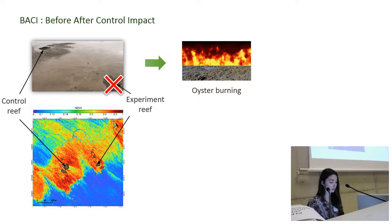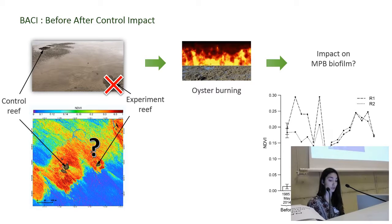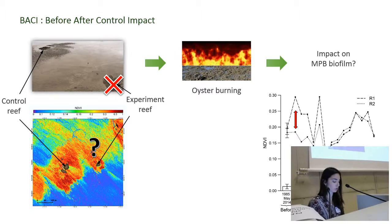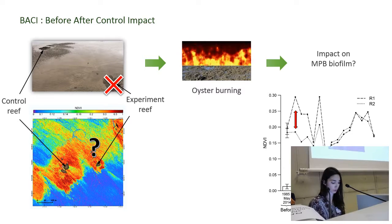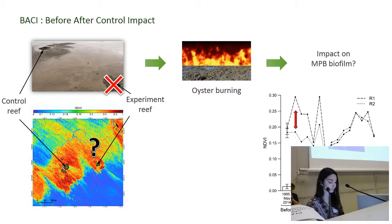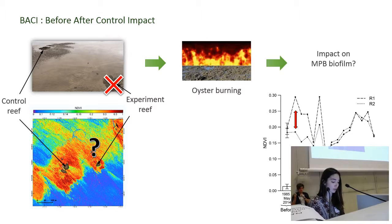What we saw on the first satellite images acquired after the experiment is the striking difference in MPB development between the two reefs. While the concentration around the control reef increased following the seasonal dynamics, the MPB around the impacted reef did not follow that development. It even came back to more normal levels only almost a few years after the experiment.